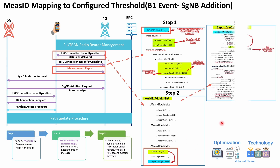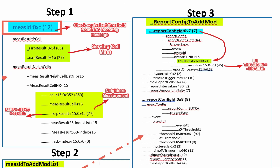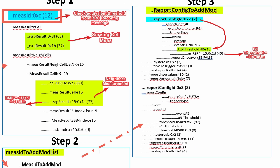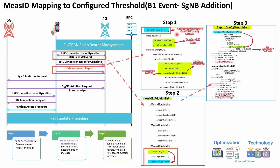For the last step, within the same RRC configuration message, check which handover event report configuration ID 7 corresponds to. As you can see when zooming in, report configuration ID 7 is equivalent to a B1 threshold. Under report configuration, interact trigger type event, the event ID is event B1. You can also find all the related parameters including RSRP, hysteresis, time-to-trigger, and other information. Now we know this measurement report is related to a B1 event.